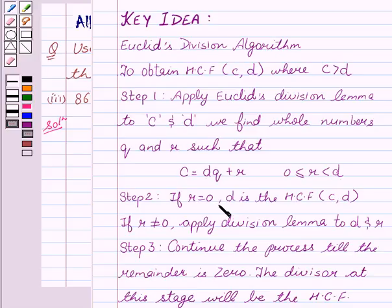If R equals 0, this implies that D is the HCF of C and D. But if R is not equal to 0, then we will apply the division lemma to D and R, and this process keeps on going till R equals 0. Thus, the divisor at that stage, that is D, will be the required HCF.